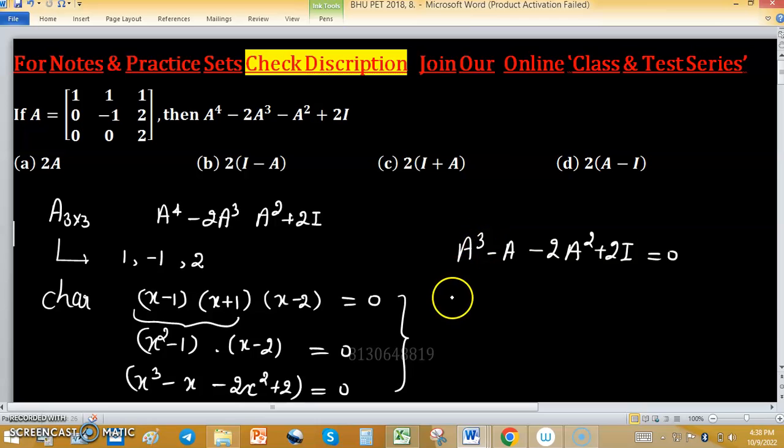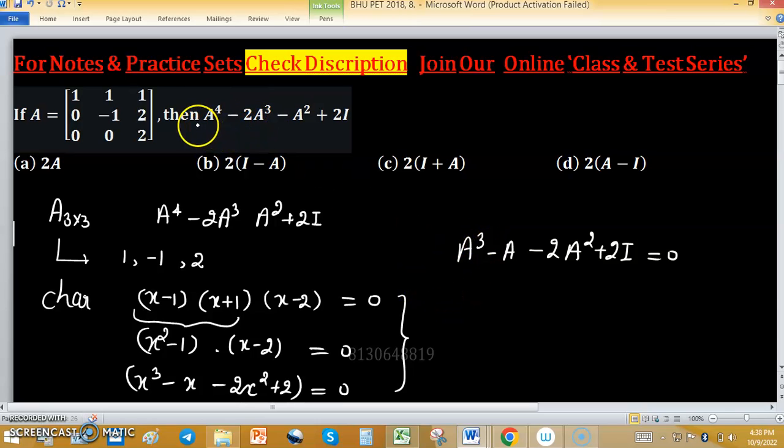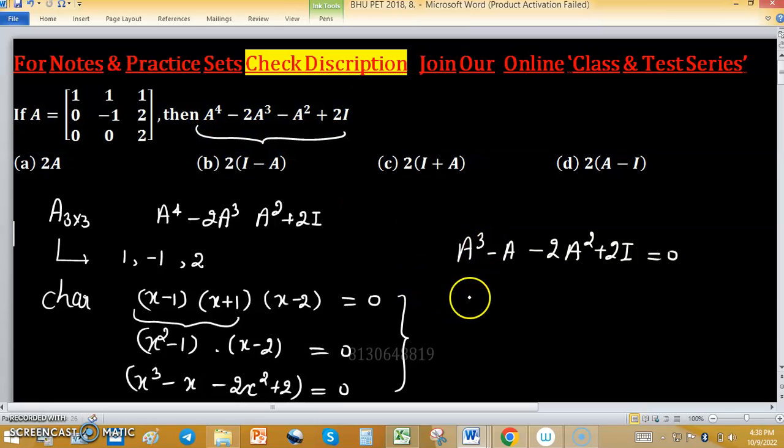Because we need to find A raised to the power 4 as asked in the question, that's why we need to multiply by A.